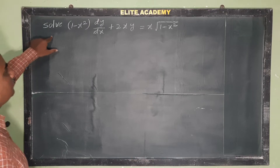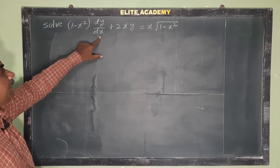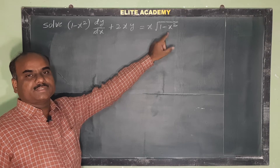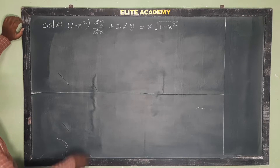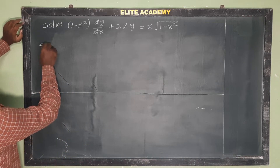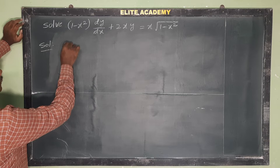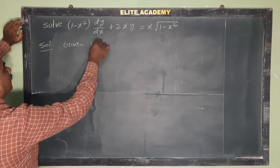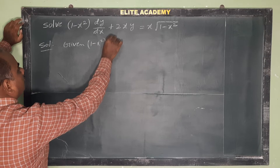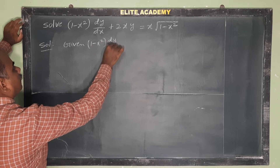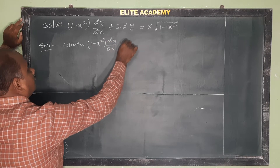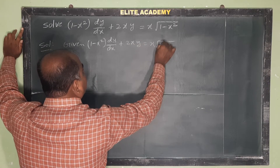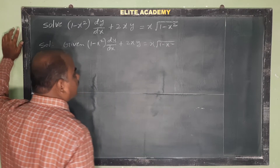Next problem: solve (1 minus x square) dy by dx plus 2xy equals x into root of 1 minus x square. Solution.